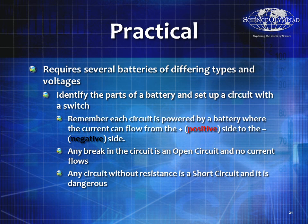Pause and get several batteries of different types and voltages. Identify the different parts of the battery and set up a circuit with a switch. The circuit is powered by a battery where current flows from the positive side to the negative side. If there's a break in the circuit, it's called an open circuit and current can't flow. If you connect the positive to the negative side without any resistance, it's called a short circuit — that's dangerous and will drain your batteries or start a fire.